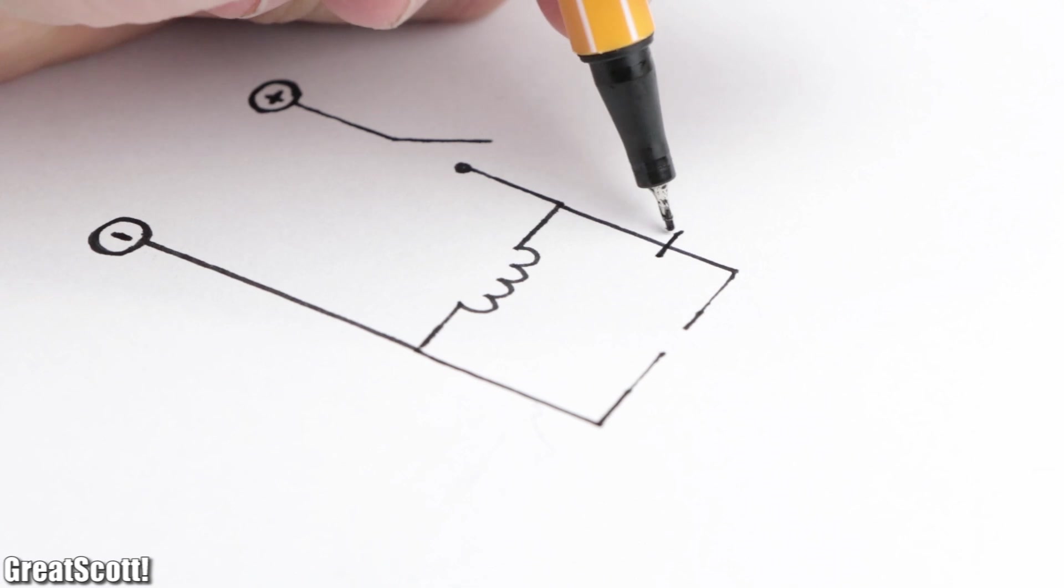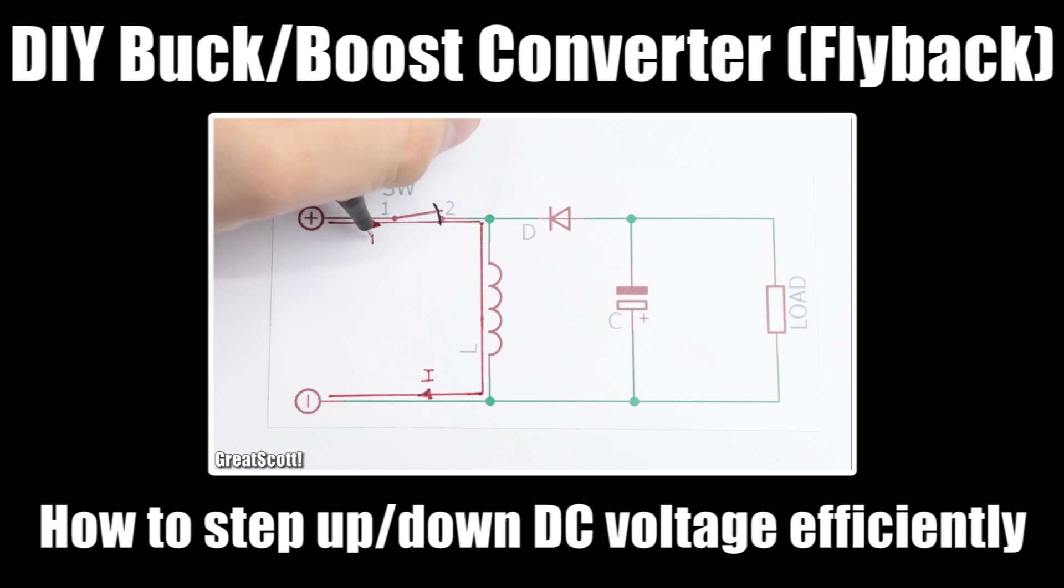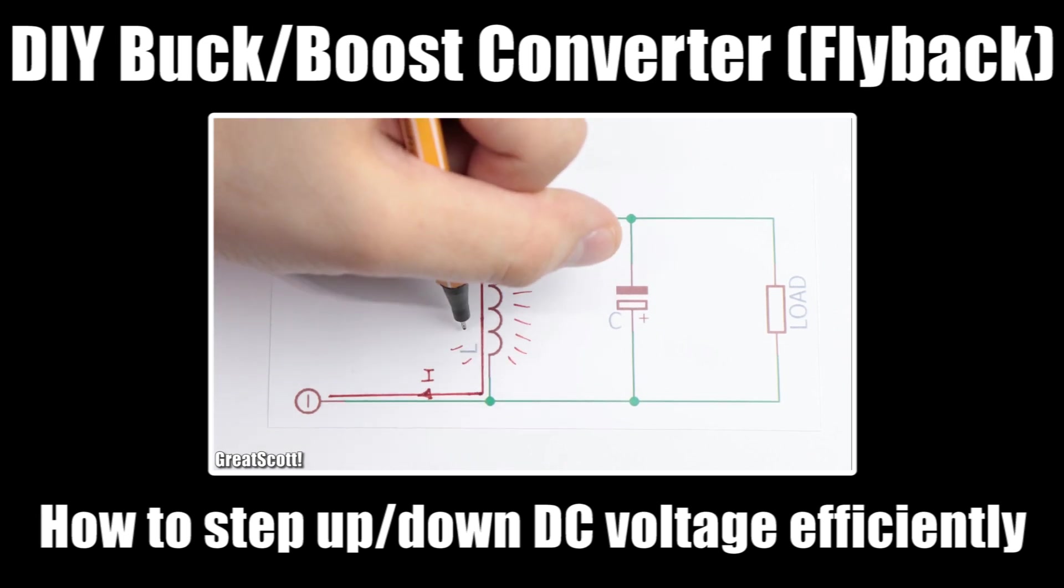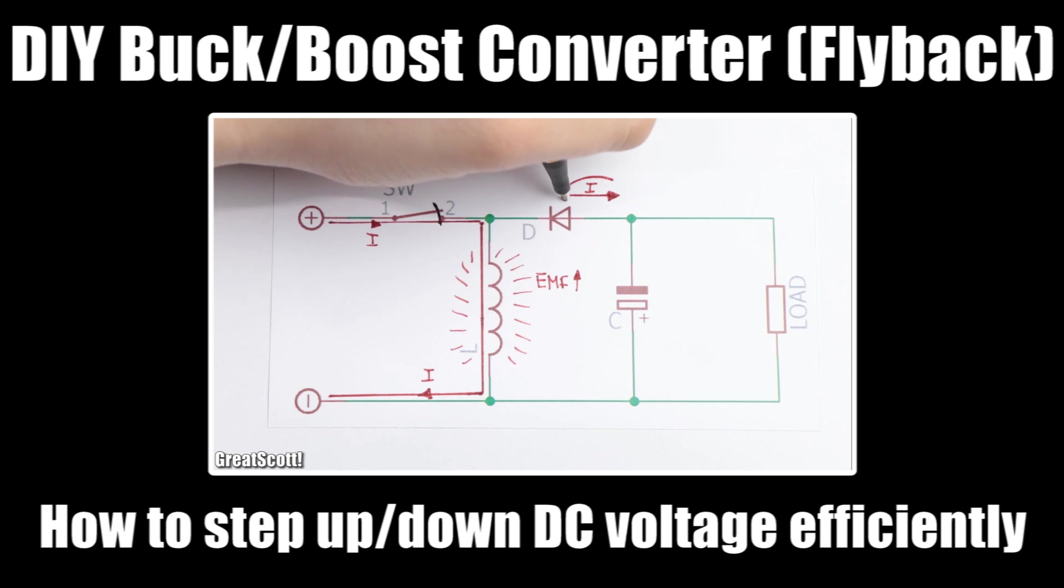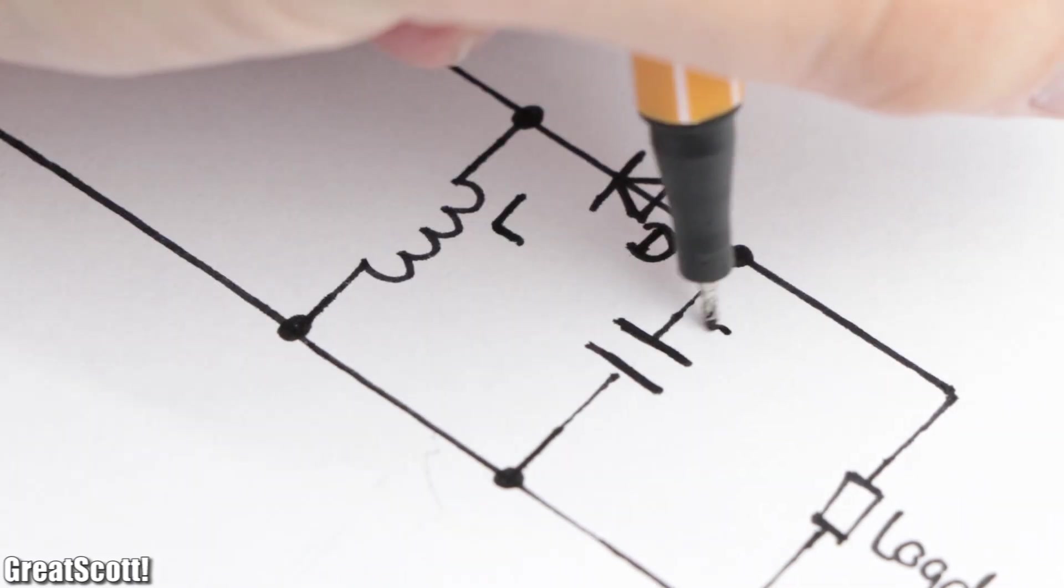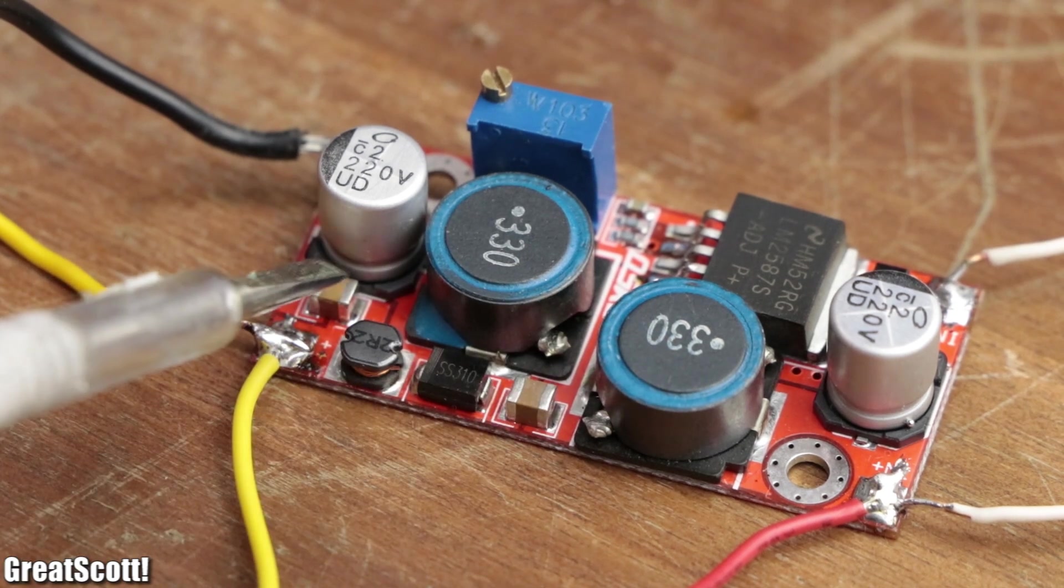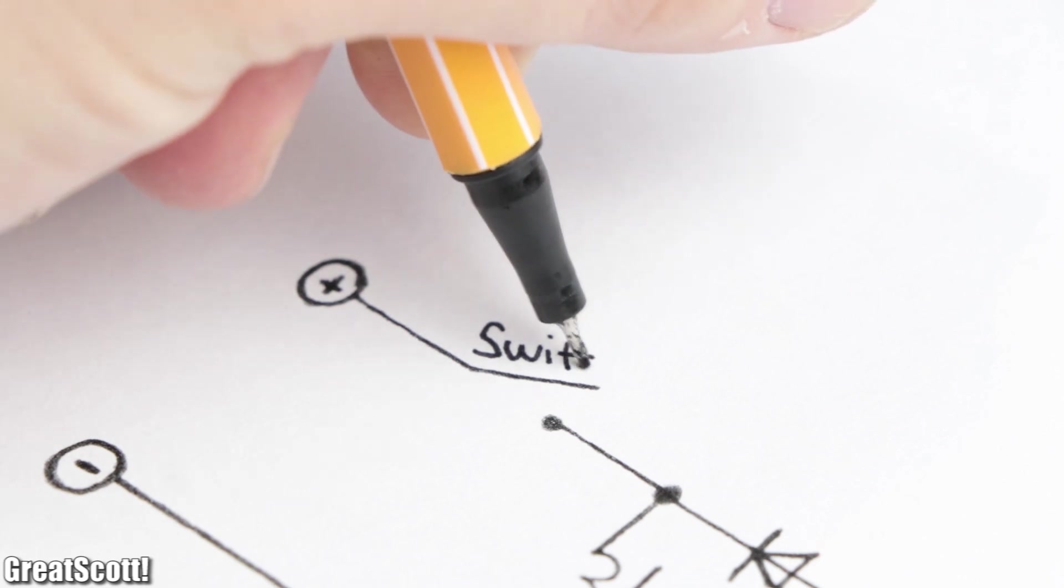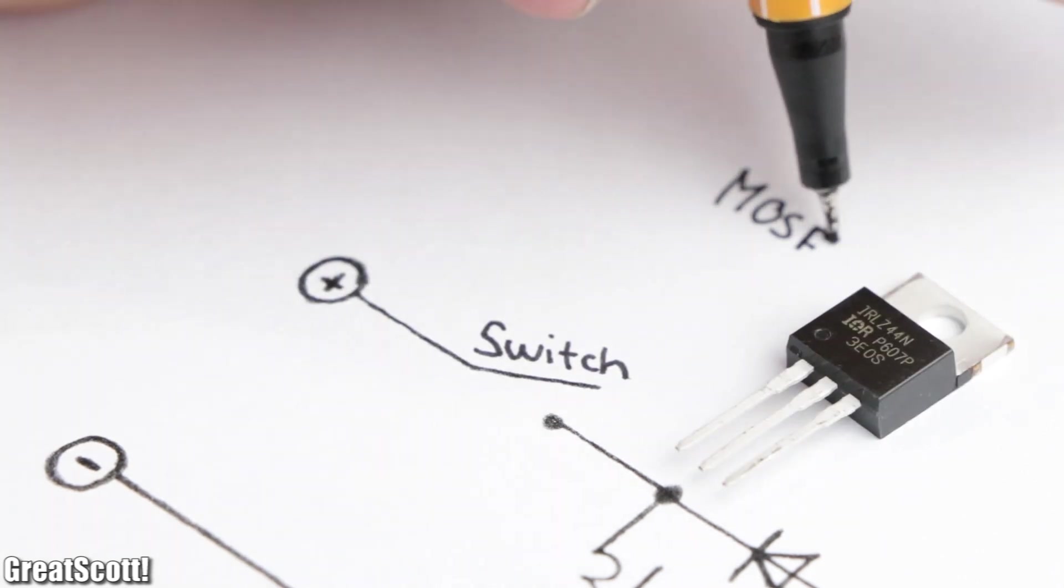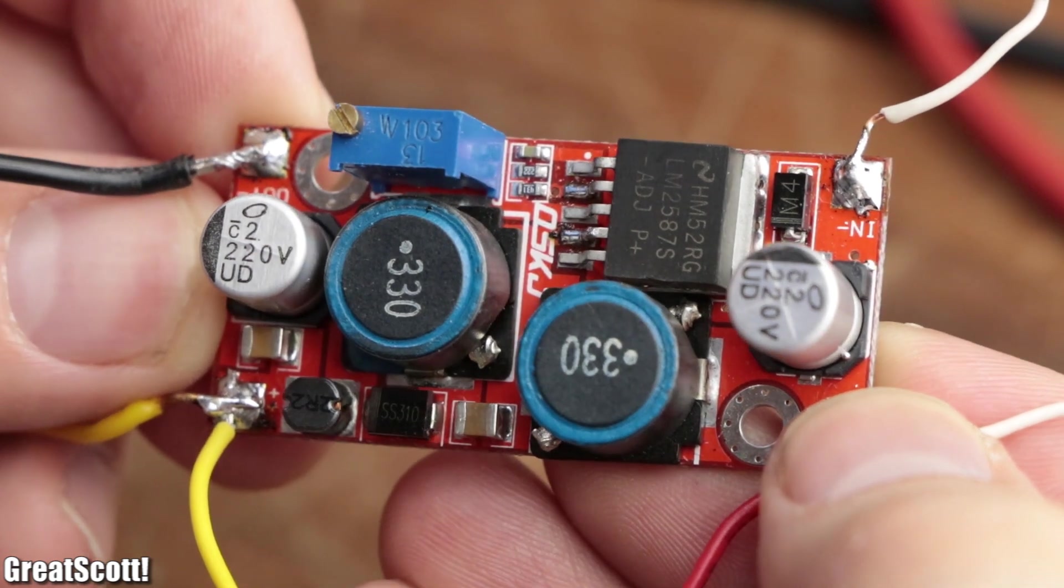A possible topology for such a buck boost converter could look something like this. And if you're interested in the working behavior of this particular circuit, then you can watch my previous video about it. Anyway, the inductor, the diode, and the capacitor component of the circuits are all visible on the PCB of the buck-boost converter. But the switch, which is usually implemented by a MOSFET or BJT, is nowhere to be seen on the PCB.